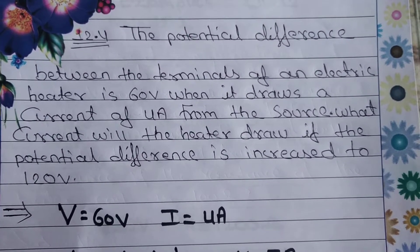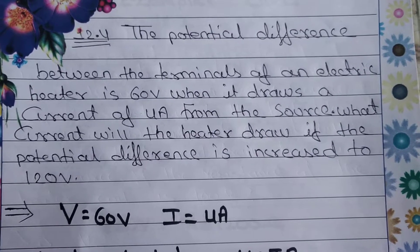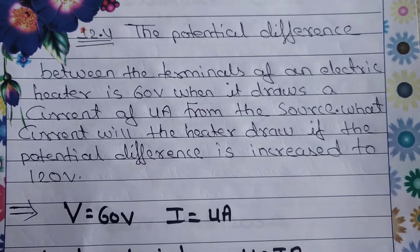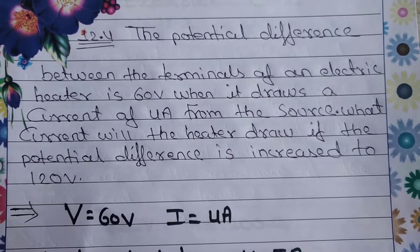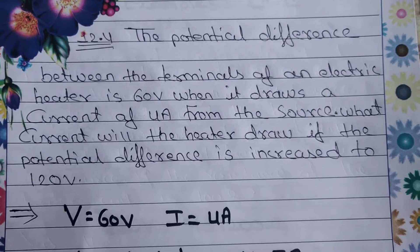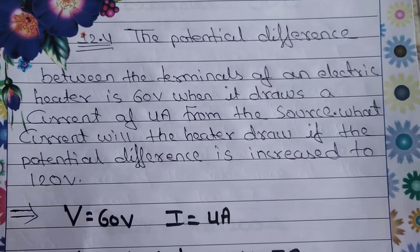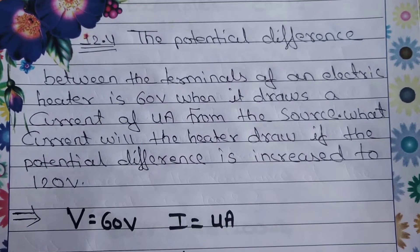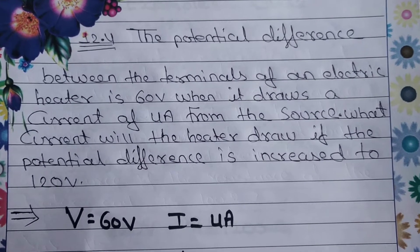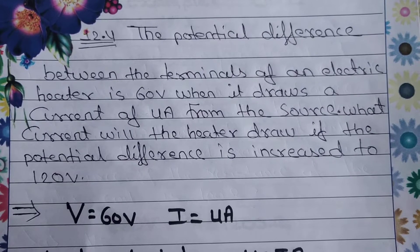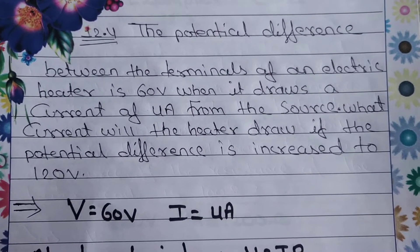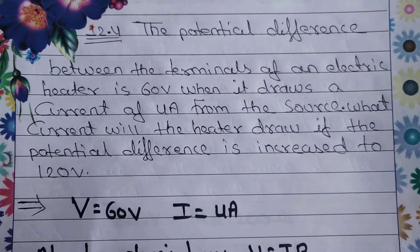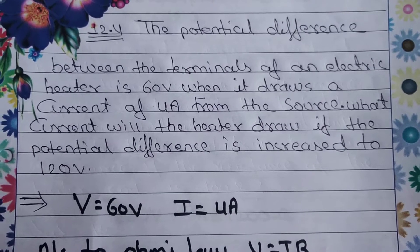Now we will solve question number 12.4. The question reads: the potential difference between the terminals of an electric heater is 60 volt when it draws a current of 4 ampere from the source. What current will the heater draw if the potential difference is increased to 120 volt? So, given V equals 60 volt and I equals 4 ampere. We have to find I when V is increased to 120 volt.